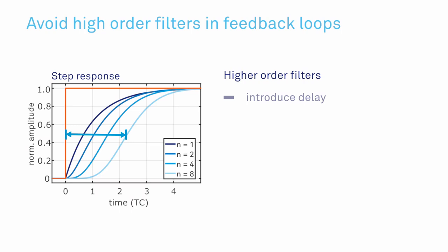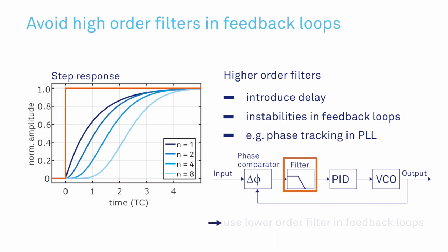First, higher order filters introduce a delay in the signal propagation, which can lead to instabilities when used in feedback loops, such as tracking the phase in a PLL. In these cases, lower order filters are always advisable.